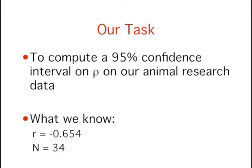Our task in this section is to compute a 95% confidence interval on rho for our animal research data. We know that the correlation found in our sample is negative 0.654 and that our sample size is 34, so let's get to work.